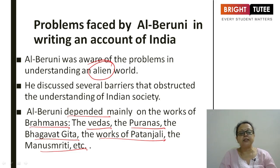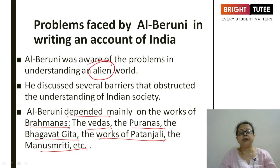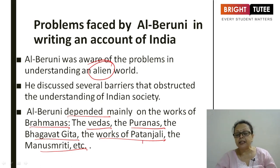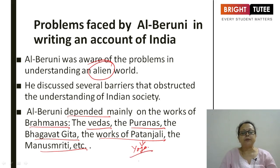These are the four Vedas — the famous religious books of India. Then the Puranas, written by sages. Bhagavad Gita is part of the Mahabharata. The works of Patanjali — he is the founder of yoga, famous these days through Baba Ramdev. Manu Smriti, written by Manu, describes the entire structure of society.